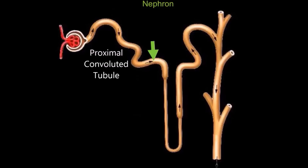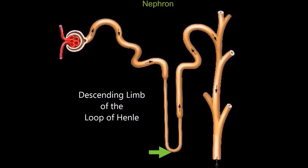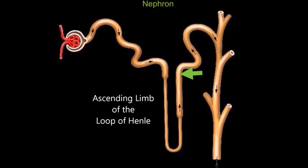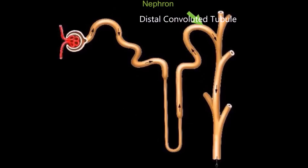Following the proximal convoluted tubule is the descending limb of the loop of Henle, then the ascending limb of the loop of Henle, the distal convoluted tubule, and the collecting duct.